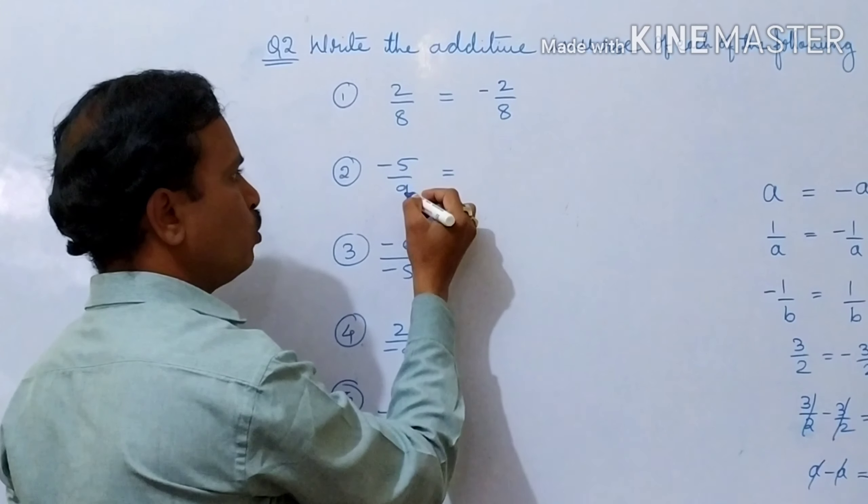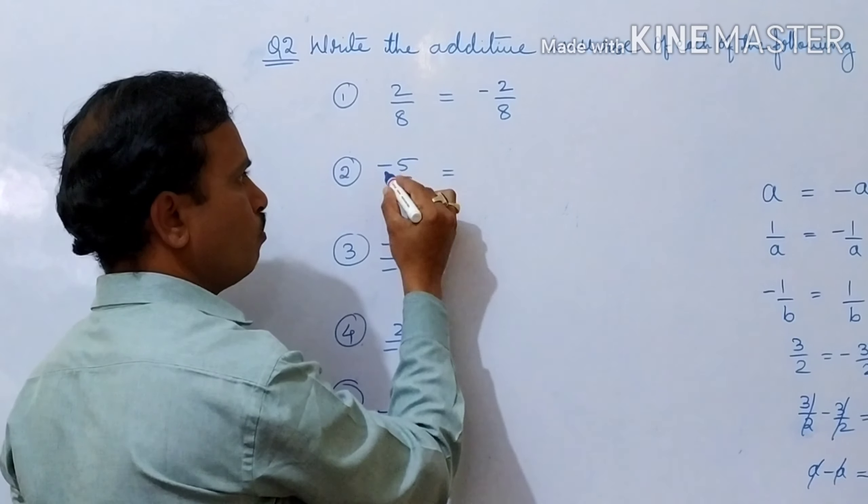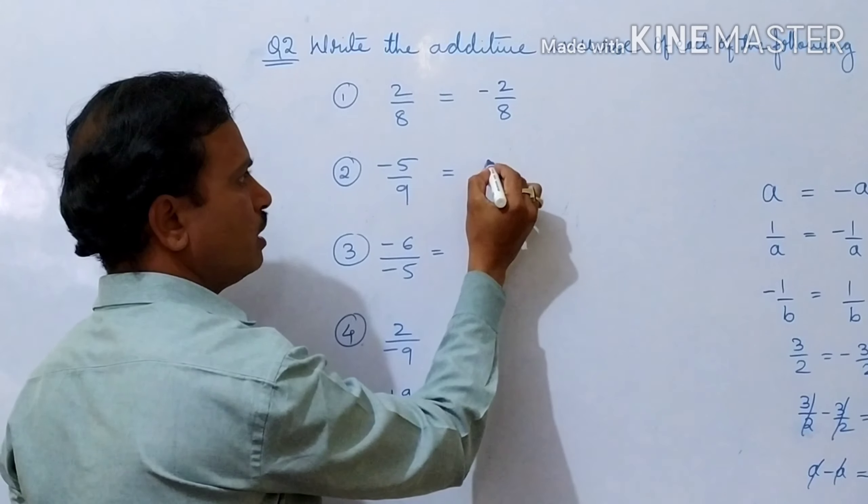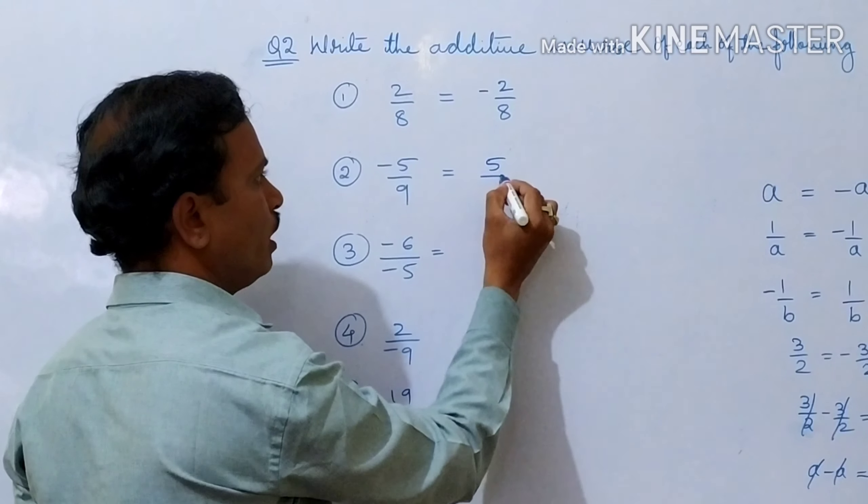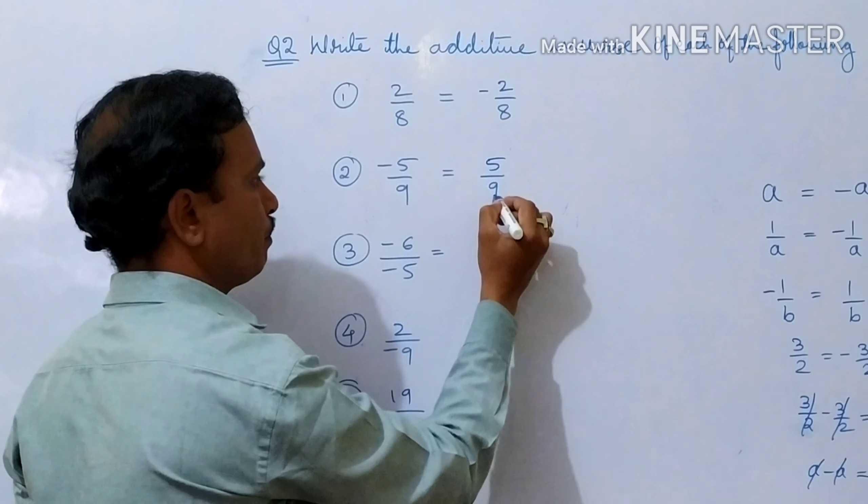Now minus 5 by 9. Minus is there, so here you should take plus: the additive inverse is 5 by 9.